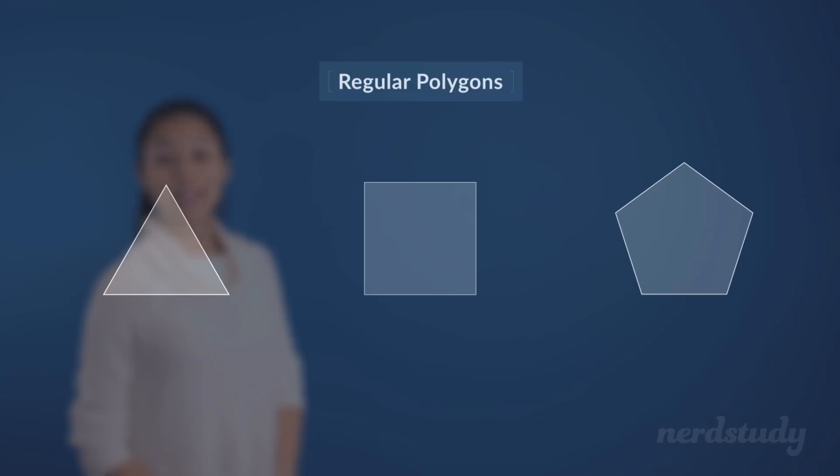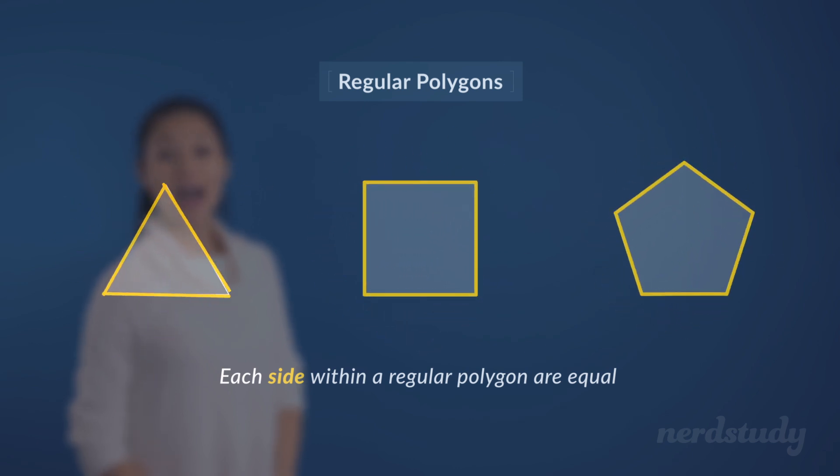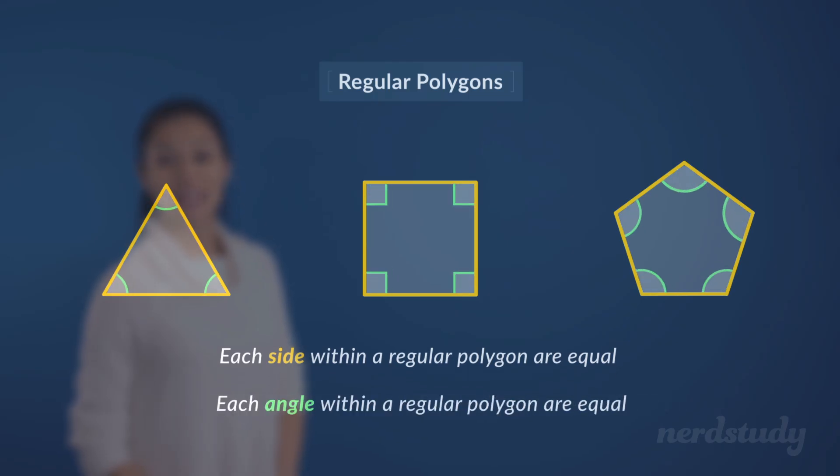If we look carefully at these polygons, we'll notice that each of these sides are equal to every other side in the polygon. And as a result of that, we've got equal angles on the insides as well. This is what makes a polygon a regular polygon.